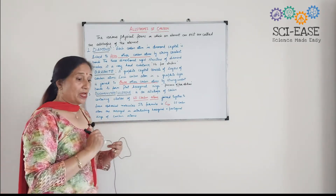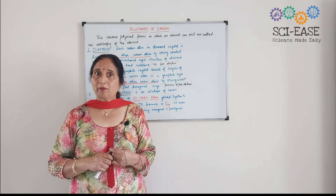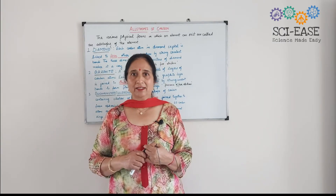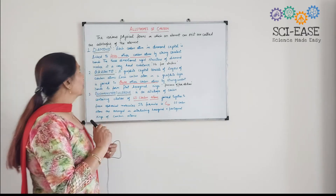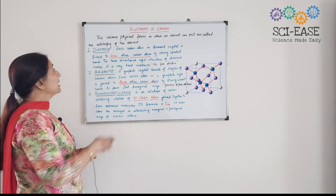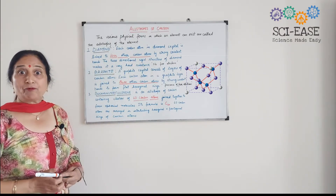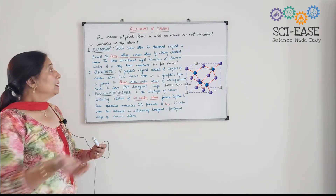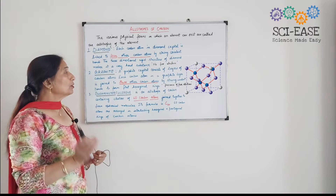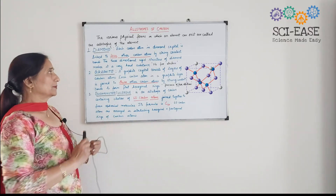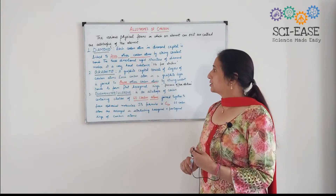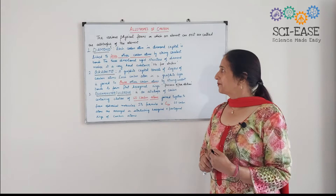Now why is there a difference in the physical properties? That is very important. This is due to the structure of diamond and graphite. In case of diamond, each carbon atom in the diamond crystal is linked to four other carbon atoms. Carbon is tetravalent, so four bonds can be formed around the carbon. Each carbon atom in the diamond crystal is linked to four other carbon atoms by strong covalent bonds.